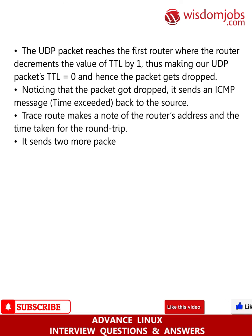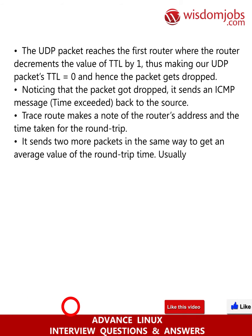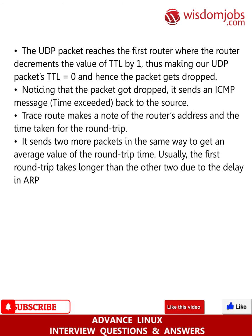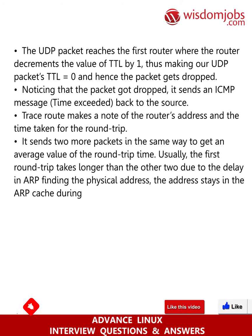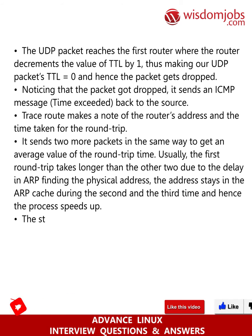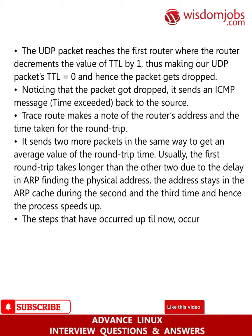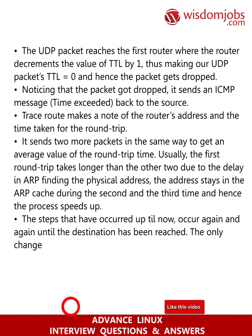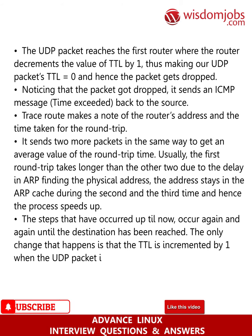It sends two more packets in the same way to get an average value of the round trip time. Usually the first round trip takes longer than the other two due to the delay in ARP finding the physical address. The address stays in the ARP cache during the second and third time, and hence the process speeds up. These steps occur again and again until the destination has been reached. The only change is that the TTL is incremented by 1 when the UDP packet is to be sent to the next router or host.